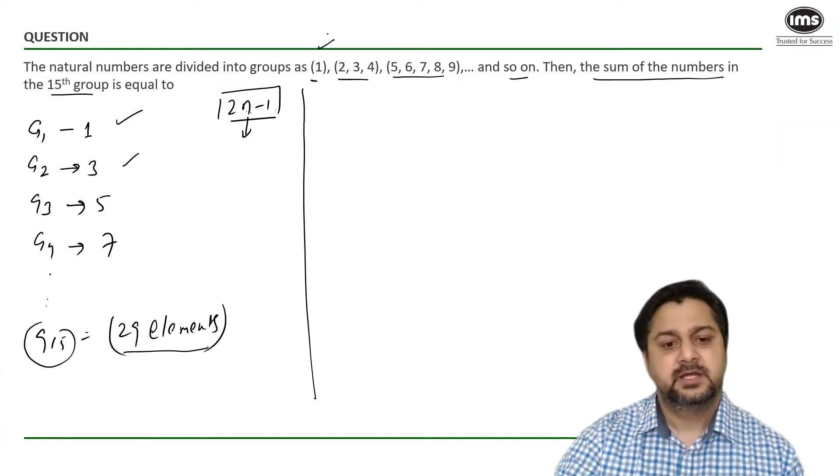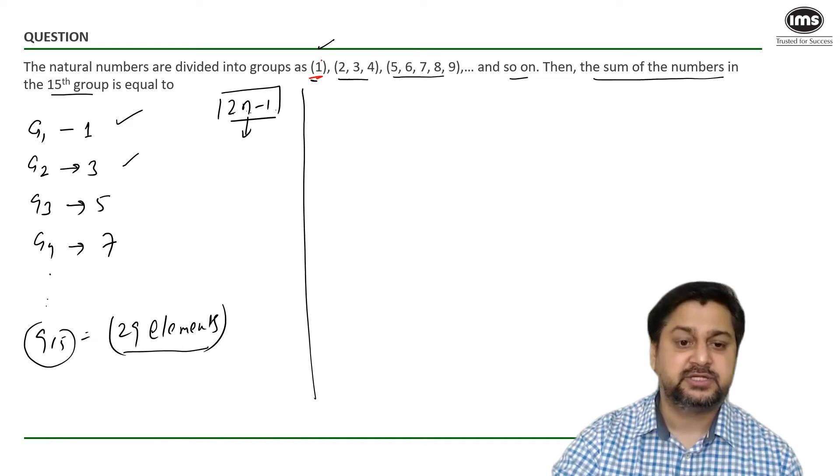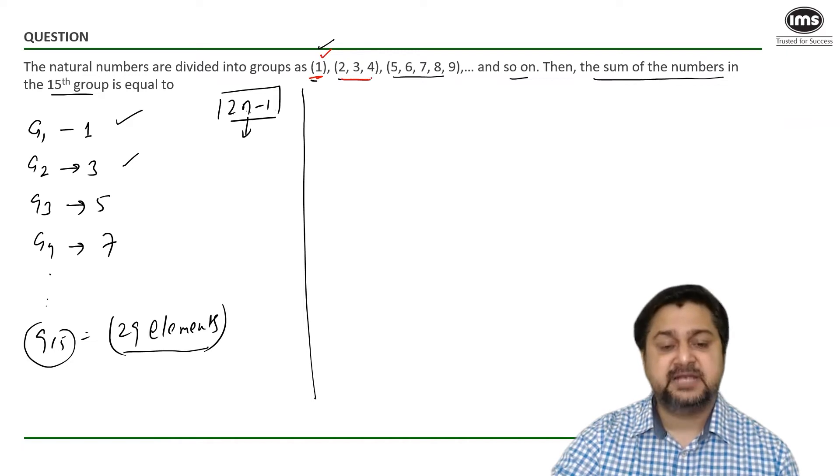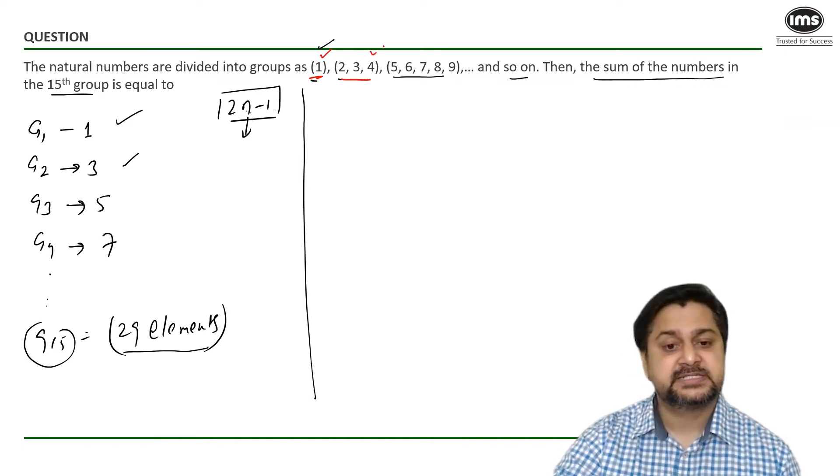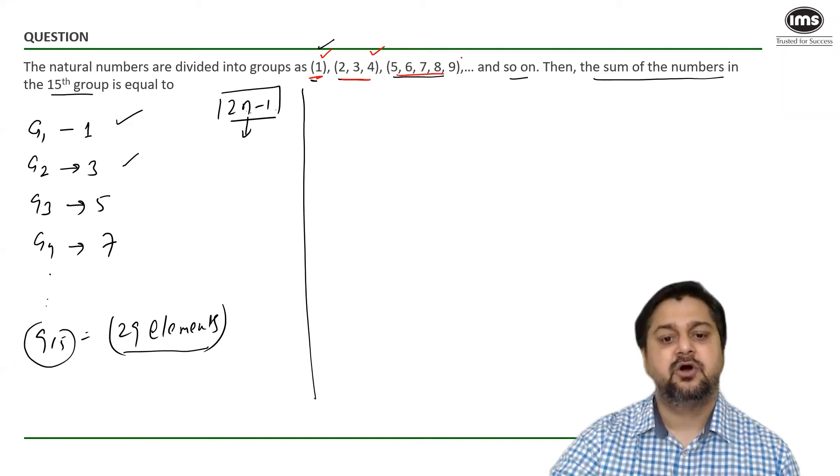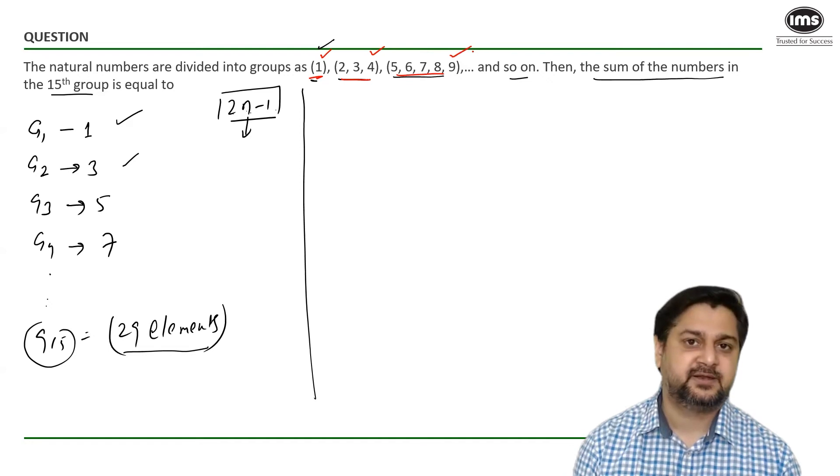If you observe, the first group ends with 1 square, or the last element of the first group is 1 square. The last element of the second group is 2 square. The last element of the third group is 3 square. You must have guessed by now.